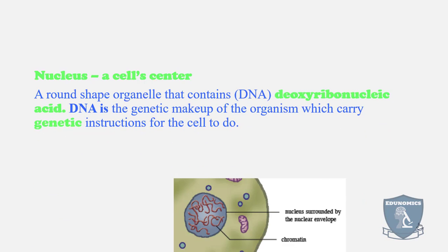The nucleus is the cell center, the operational aspect of the cell. It's a round-shaped organelle that contains DNA, which stands for deoxyribonucleic acid. DNA is the genetic makeup of the organism which carries the genetic instructions that tell the cells what to do. The DNA controls what happens in the cell.